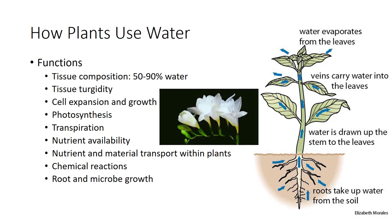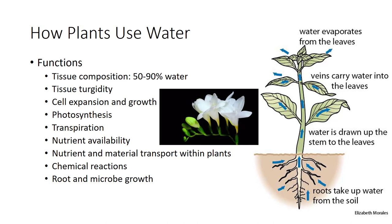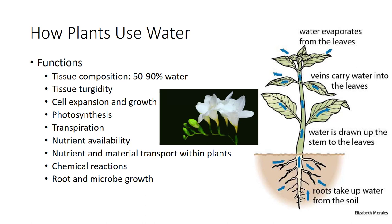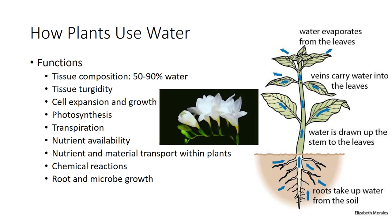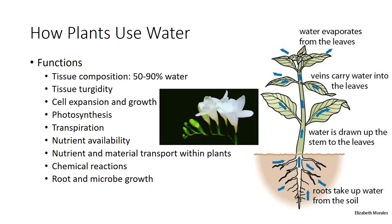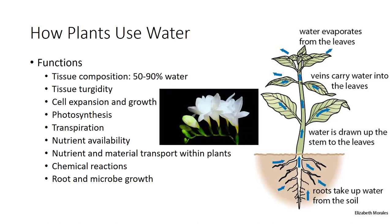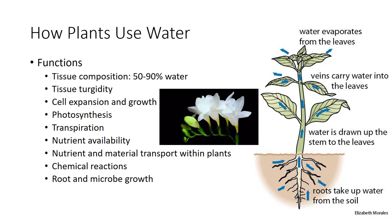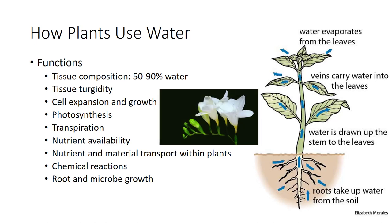Plant cells are largely made up of water. Plant tissue is 50% to 90% water, depending on the type of tissue. When plant cells are full of water, plant tissue is turgid because of internal water pressure. This keeps stems upright and leaves expanded to receive sunlight. The internal water pressure causes cells to expand, promoting larger leaves, larger internodes, and rapid growth.